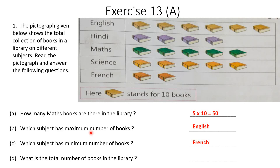What is the total number of books in the library? Counting all subjects together, there are 22 books shown in the pictograph. Since 1 book stands for 10 books, we multiply 22 into 10, which gives 220. So there are 220 books in total.